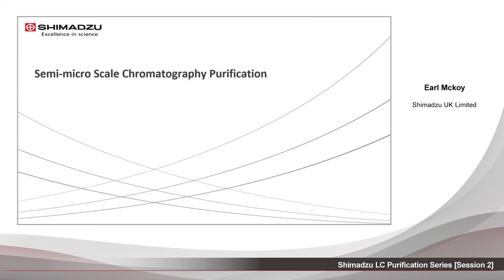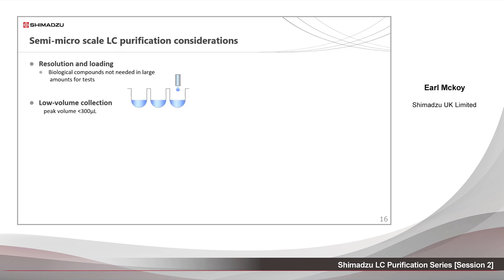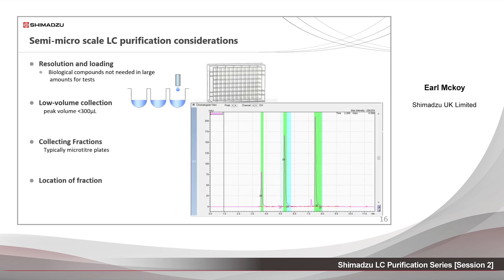And now to semi-micro scale purification. As we have just mentioned, these biological compounds are usually not required in large amounts. Low volume collection is typical and involves collection of tens to hundreds of microliters for the smallest piece. This suits microplates because of their compact, low volume, but small tubes or vials can also be used. To help identify where peaks have been collected, graphical peak tracking accurately displays peak positions in the racks and tubes. Most modern systems will have a visualisation of this.